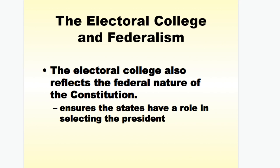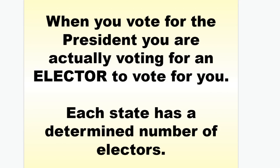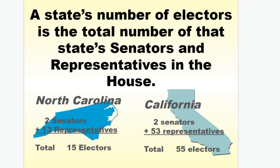The Electoral College also reflects the federal nature of the Constitution, ensuring states have a role in selecting the president, not just people. So when you vote for president, you're actually voting for an elector to vote for you. Each state has a determined number of electors equal to its number of senators plus representatives in the House. North Carolina, for instance, has two senators and 13 representatives, so 15 total electors. California has 53 representatives and two senators, so 55 electors. These electors tend to be former party bosses or people with prestigious backgrounds in political causes.